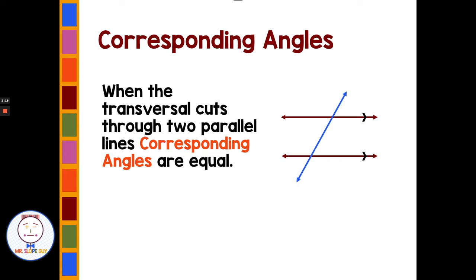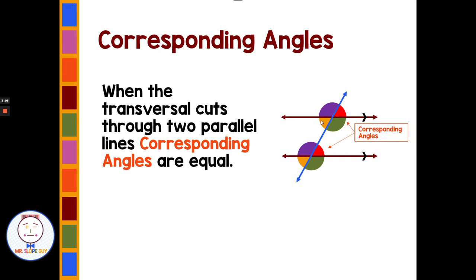When the transversal cuts through two parallel lines, corresponding angles are equal. The two angles in red are called corresponding. If you have colored pencils or pens, this is a great time to use them for color coding, because you will be assessed on the names of these angles — not just that they're equal. There are four pairs of corresponding angles shown in red, purple, green, and yellow-orange, and all are equal or congruent. So if the green angle up top is 120, the green angle below is also 120, and the math reason is that corresponding angles are equal.